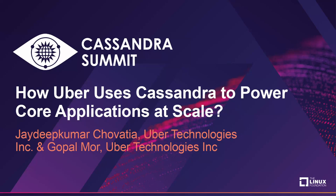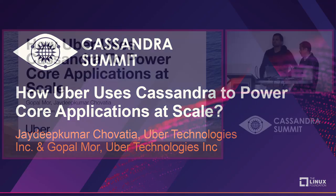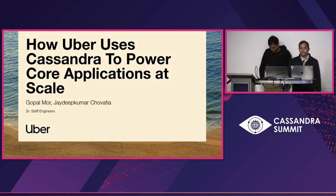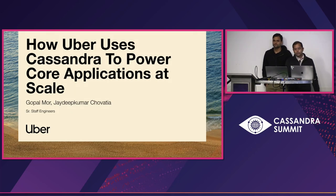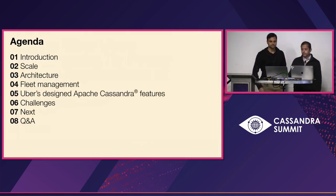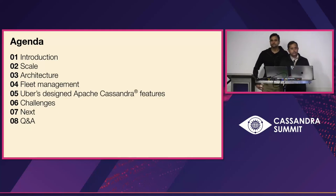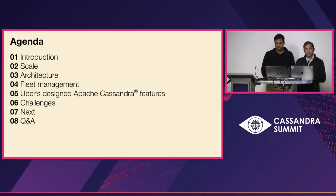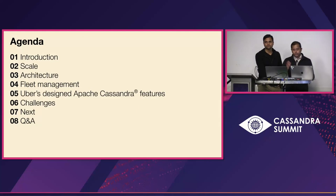Thanks everybody for joining. I'm Gopal and he's my colleague Jaydeep. We are from Uber. Today we will present how Uber uses Cassandra to power our core applications at a very large scale. The agenda looks like this: we'll have some introduction, touch upon the scale architecture and how we manage the fleet, cover features we have developed at Uber and pushed upstream, and also touch upon some of the challenges we face.